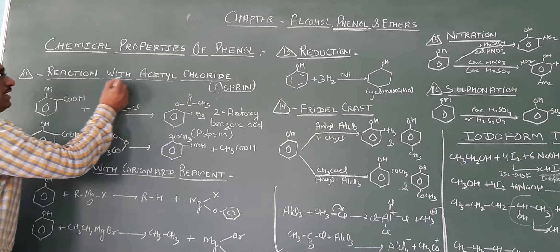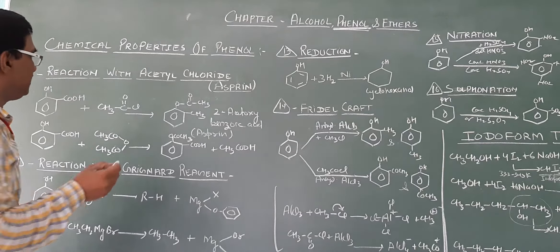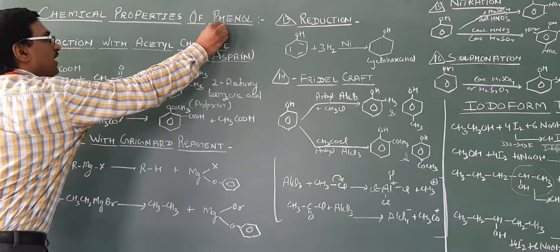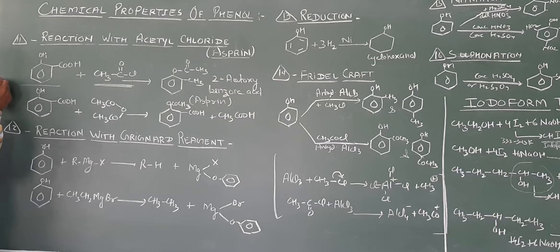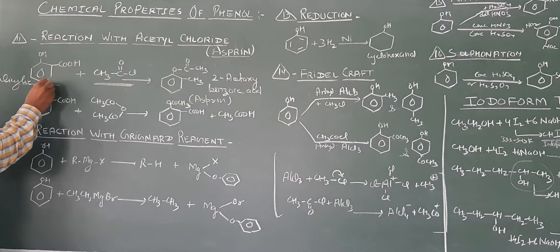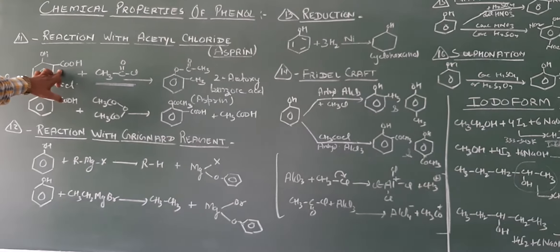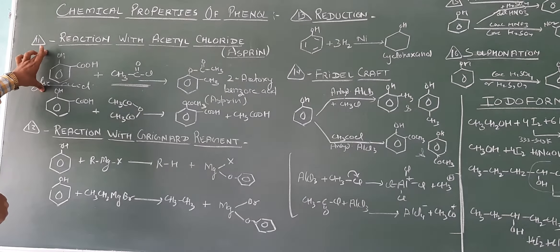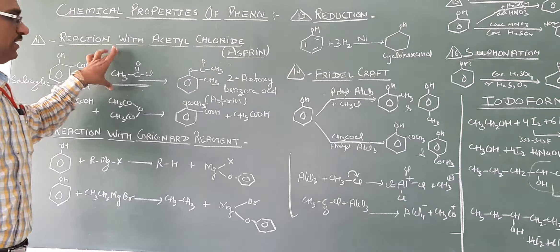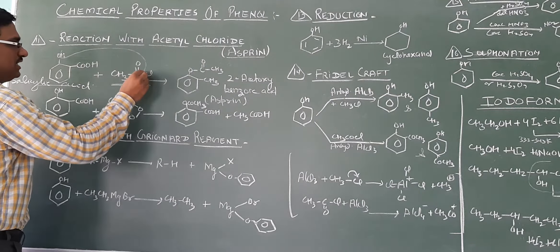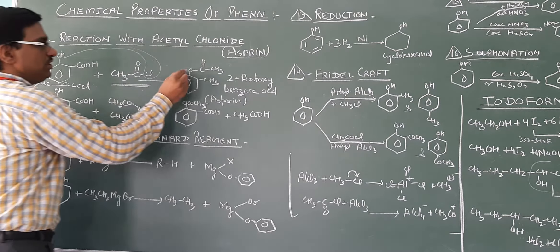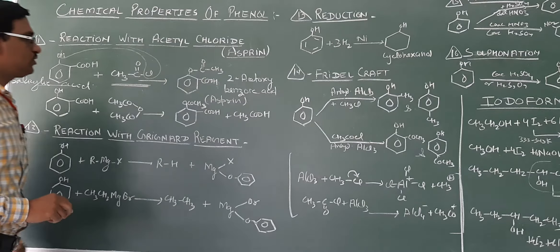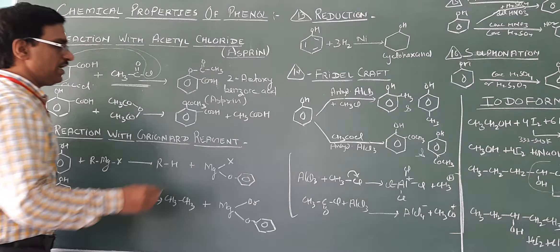First, reaction with acetyl chloride. Acetyl chloride, CH3COCl. Our reactant is not phenol, it is salicylic acid. When we react with acetyl chloride, we get OCOCH3. That is 2-acetyl benzoic acid, called aspirin.